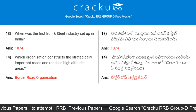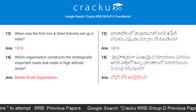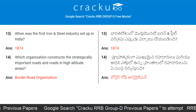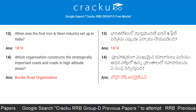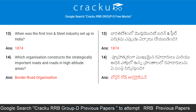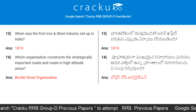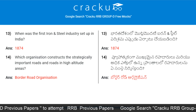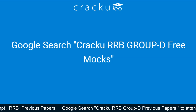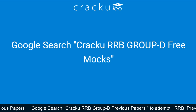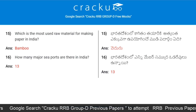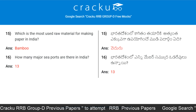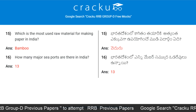When was the first iron and steel industry set up in India? 1874. Which organization constructs strategically important roads in high altitude areas? Border Roads Organisation. Which is the most used raw material for making paper in India? Bamboo.